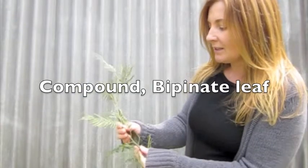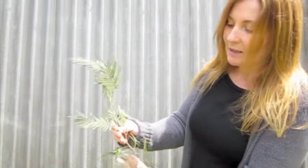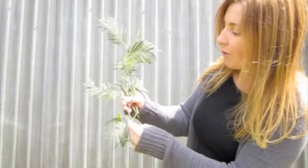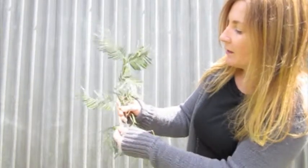This dicotyledon has a compound leaf. The reason we know that this is an entire leaf is because there's growth from the auxiliary bud here with fruit forming.